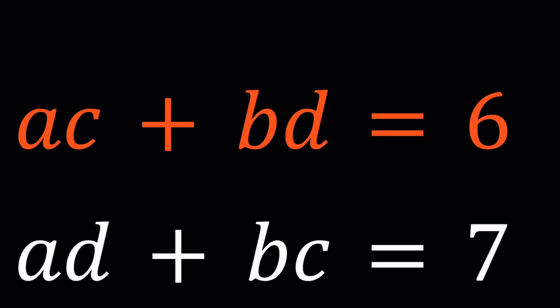I have two equations, AC + BD = 6, and AD + BC = 7. These two equations were carefully made up, so that they would not be factorable in and of themselves. When you look at the first equation, there's no common factors. They're all different. And the second equation is the same.